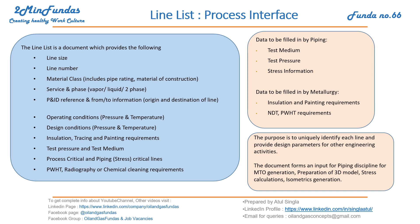Although the line list is a document from process, a few pieces of information the process discipline receives from piping. For example, test medium, test pressure, and stress information — this is given by piping, and process fills this information into their line list.